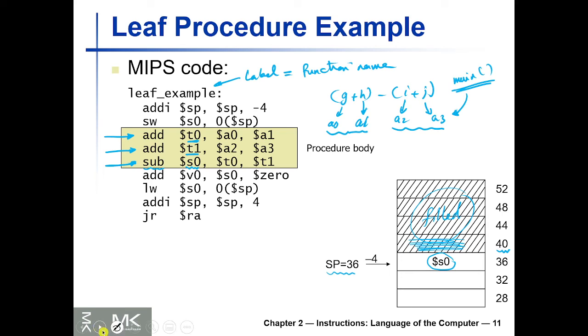After that we should move this to v0, so we do that using the add instruction, but we add S0 to 0, which is basically 0, and assign this to v0.